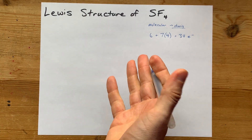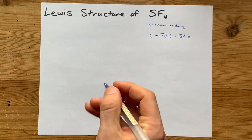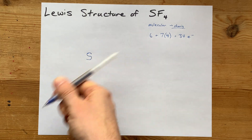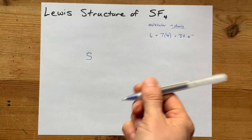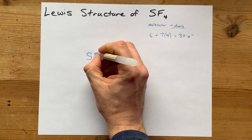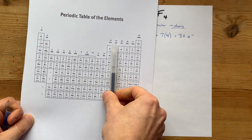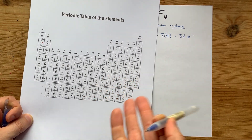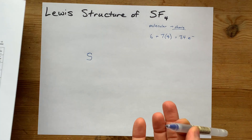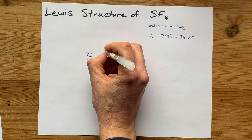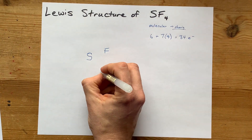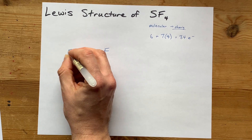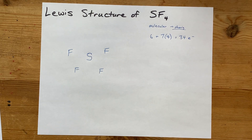The first actual step to drawing the Lewis structure is to put one of the atoms in the center — usually the one that can accommodate the most bonds, meaning it's closest to group 14, because those have the highest bonding capacity. Then I surround it with the other atoms, in this case four fluorines.